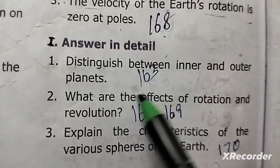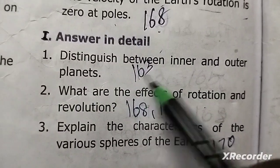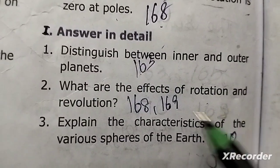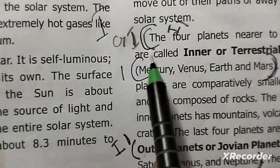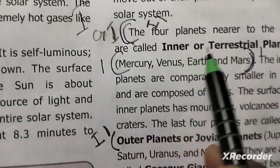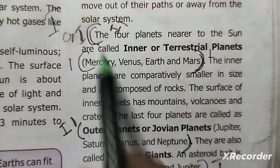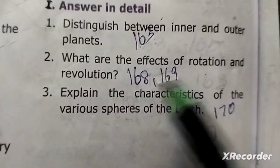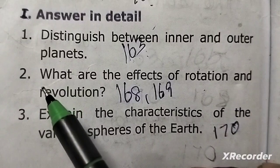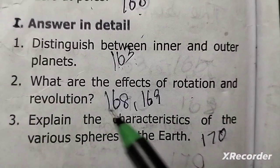Additional questions: what is the distance between the inner and the outer planets? The four giant planets are Jupiter, Saturn, Uranus, and Neptune — these are the outer planets. Second question: what are the effects of rotation and revolution?